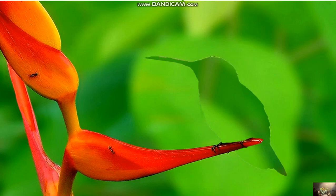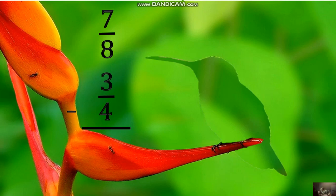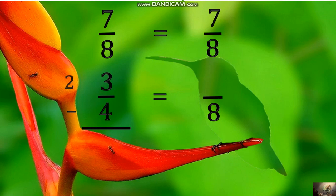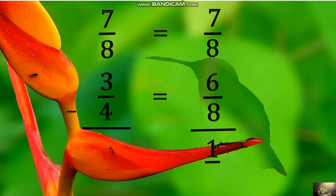The last example is 7 eighths minus 3 fourths. Finding the LCD is 8. Divide 8 by 8 equals 1, times 7 equals 7. 8 divided by 4 equals 2, times 3 equals 6. Subtract now: 7 eighths minus 6 eighths, by subtracting the numerators: 7 minus 6 equals 1. Copy the denominator 8. Therefore the correct answer is 1 eighth.